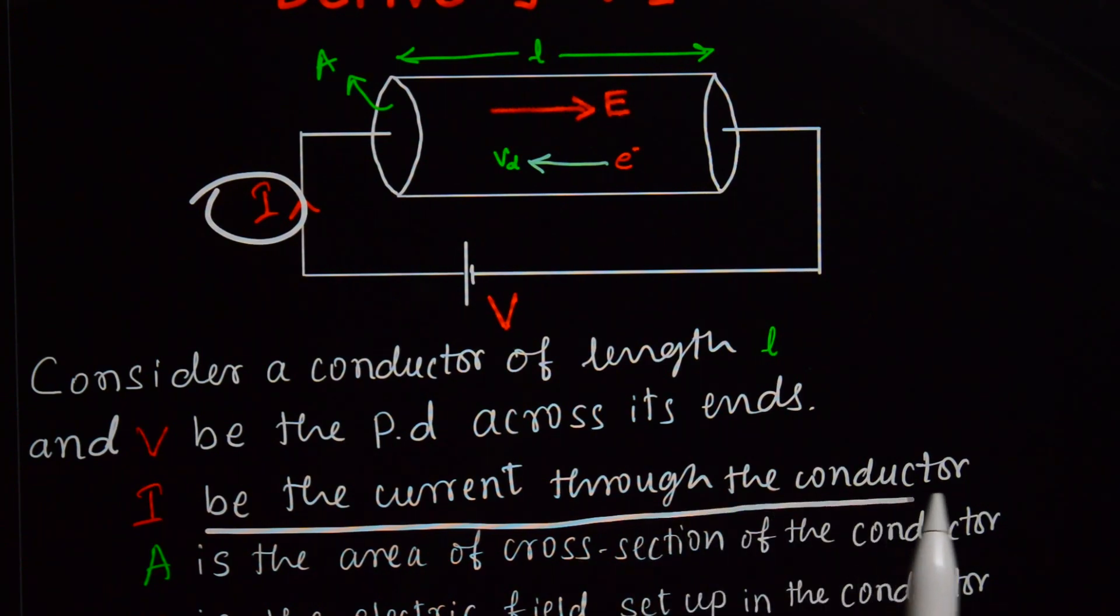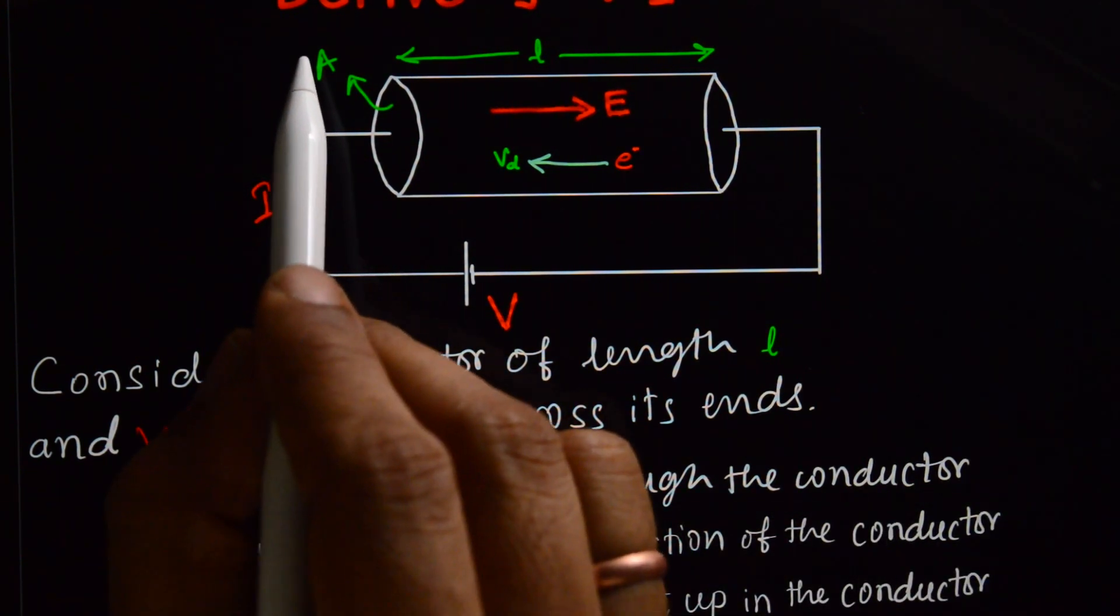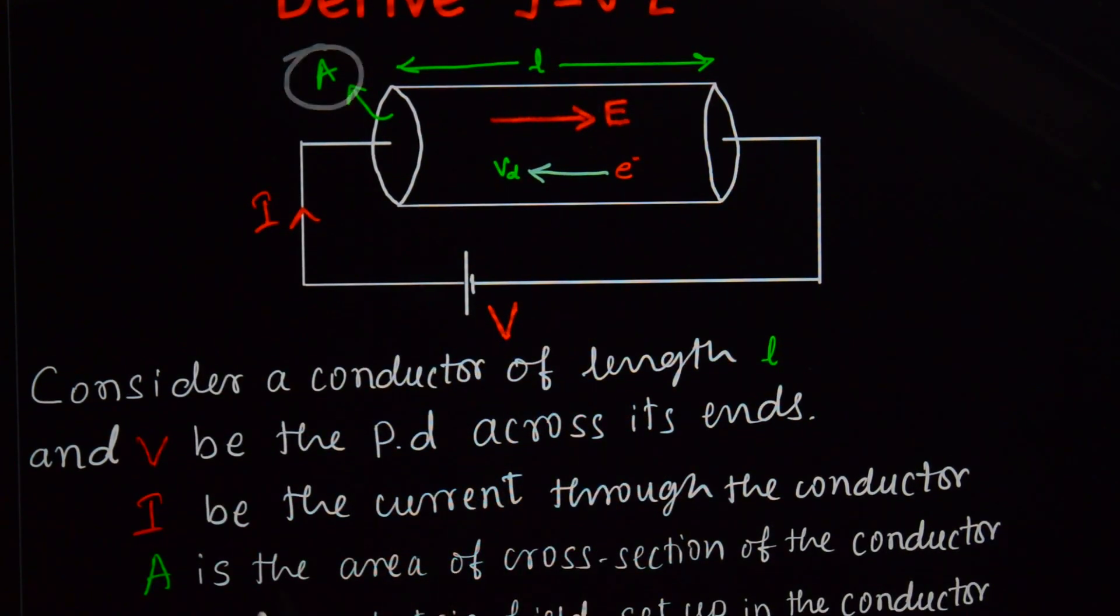I is the current through the conductor. Here A is the area of cross-section of the conductor.